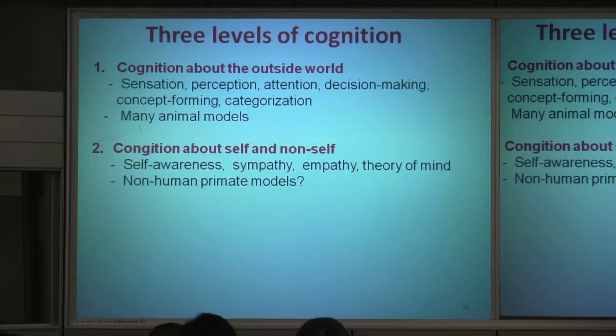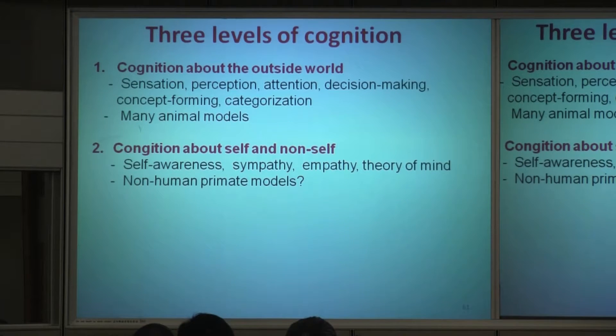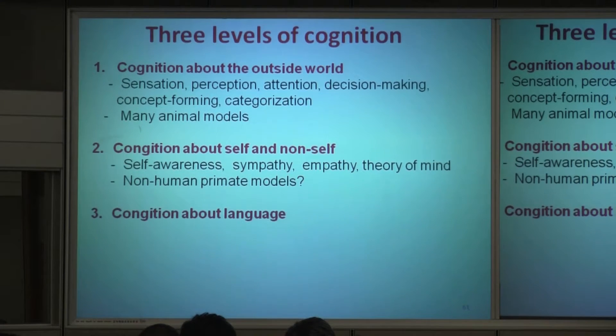Now, who has self and non-self cognition? Non-human primates may have some. Some non-human primates may serve as a model system. But below the primate level, there is no model for this so far. This is very important because it is an important transition to the human-specific function of language. For language to be recognized, you need to have cognition of self and non-self. Without self and non-self cognition, you cannot have language.